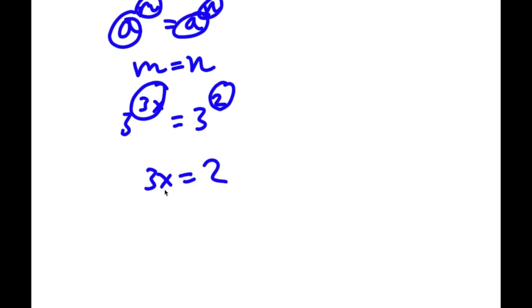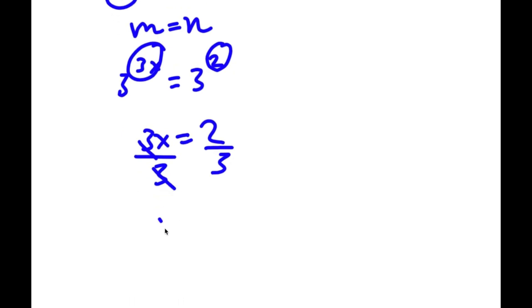So now we have a simple equation: 3x is equal to 2. If I divide both sides by 3, these cancel out and I get x is equal to 2 over 3.